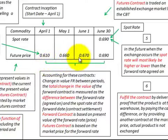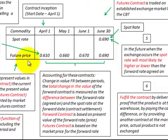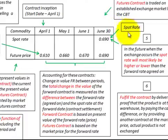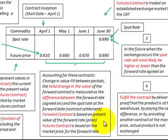What we're looking for is the change in forward rates between periods. The total change in value of a forward contract is measured as the difference between the forward rate agreed on at the contract start date and the spot rate at the forward date or contract settlement date. The forward contract is based on the present value of the forward rate, whereas the futures contract is based on the market price for that forward rate.